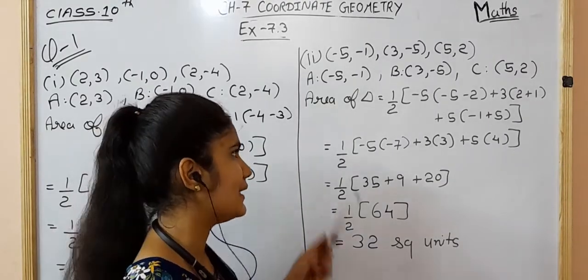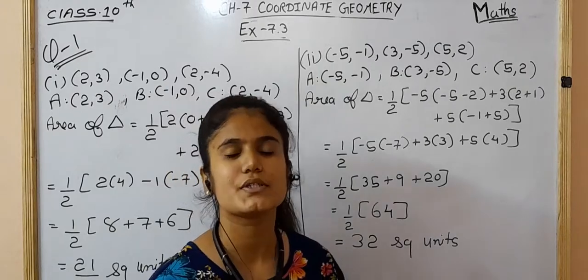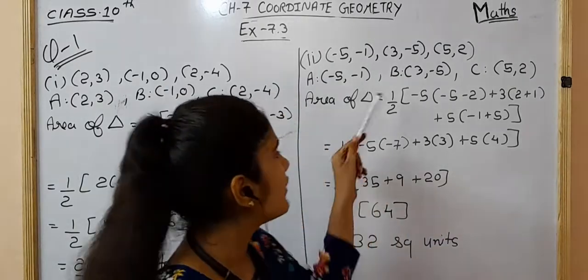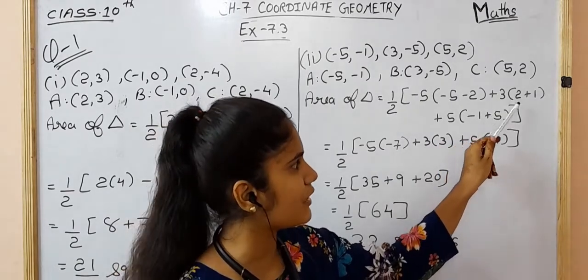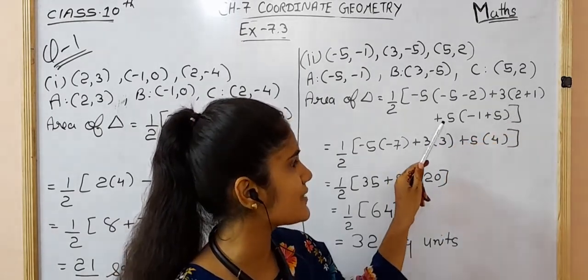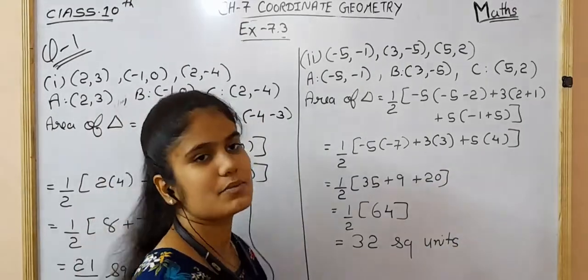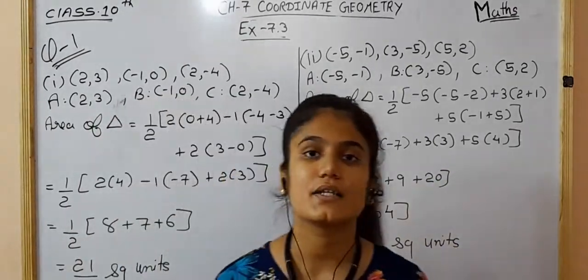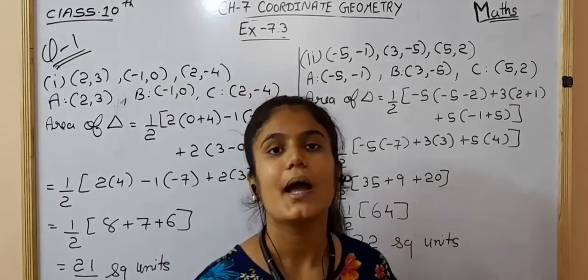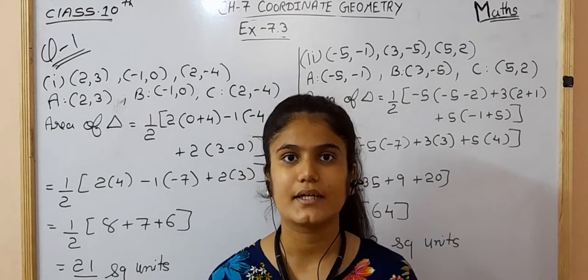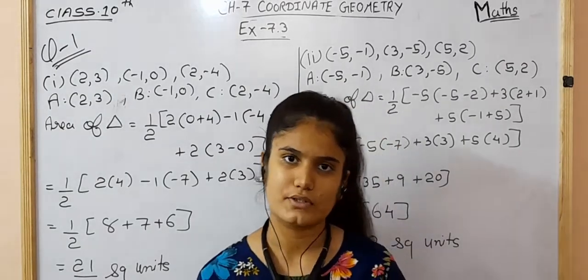Using the same area of triangle formula — 1/2 into X1(Y2 − Y3) + X2(Y3 − Y1) + X3(Y1 − Y2) — and substituting the given values, we get 32 square units as the answer for the area of triangle. These are the answers for the area of triangle using the vertices and coordinates given. Pause the video to note the solution.